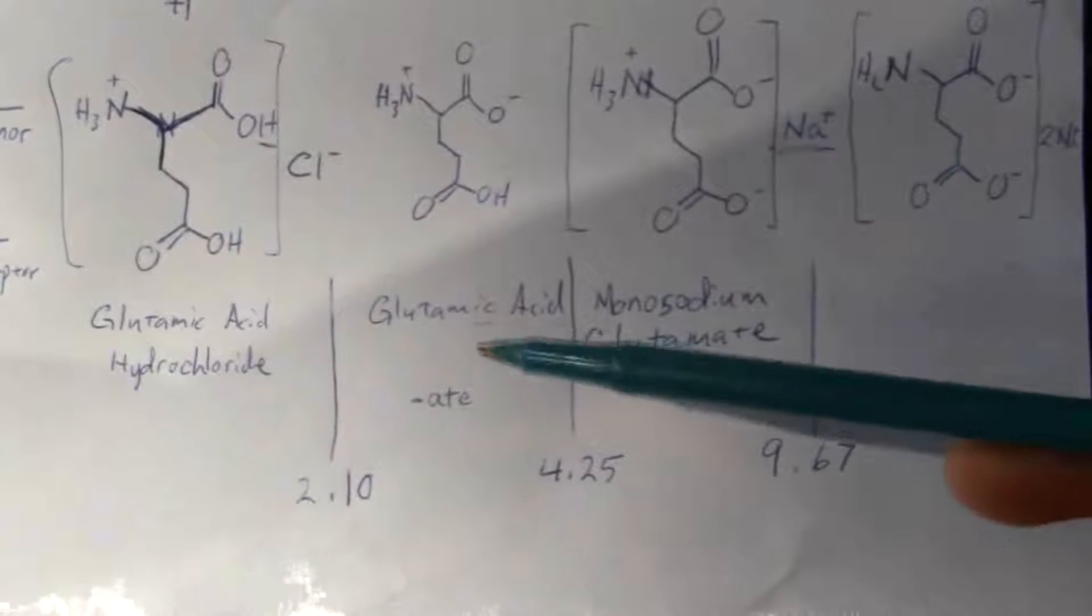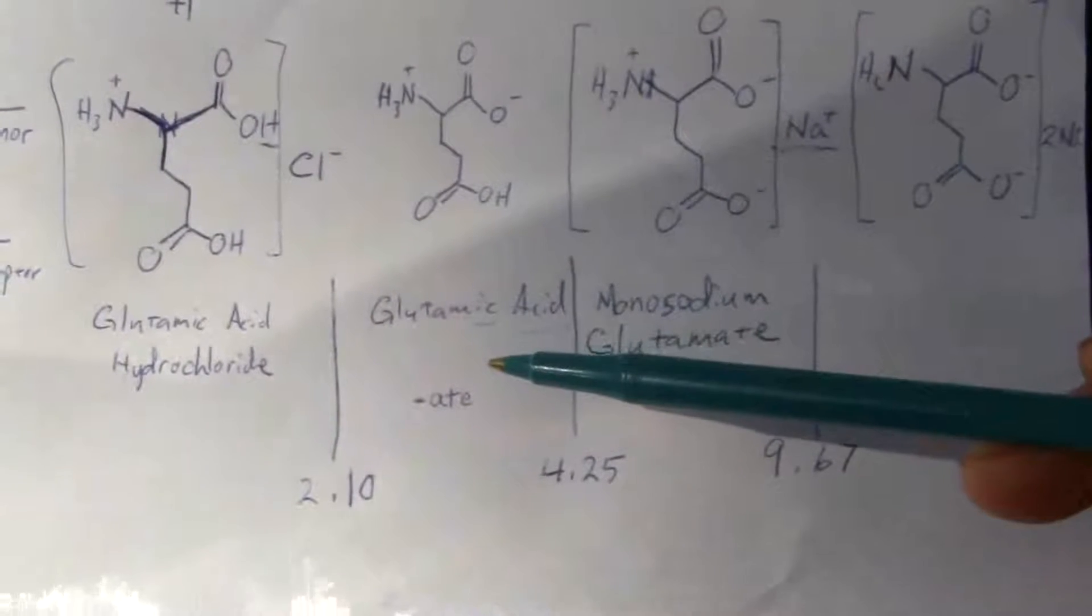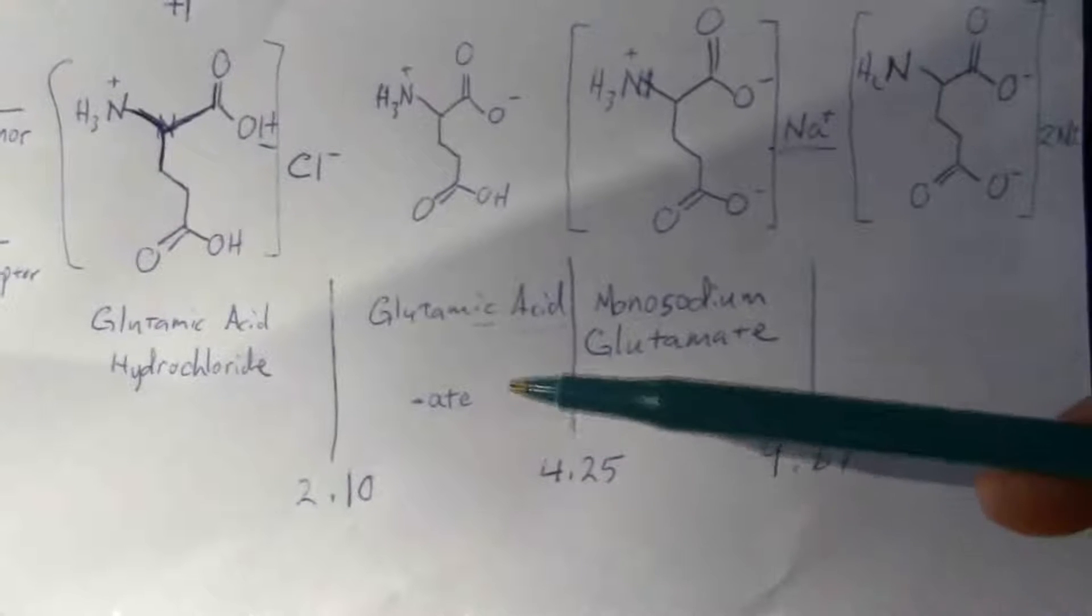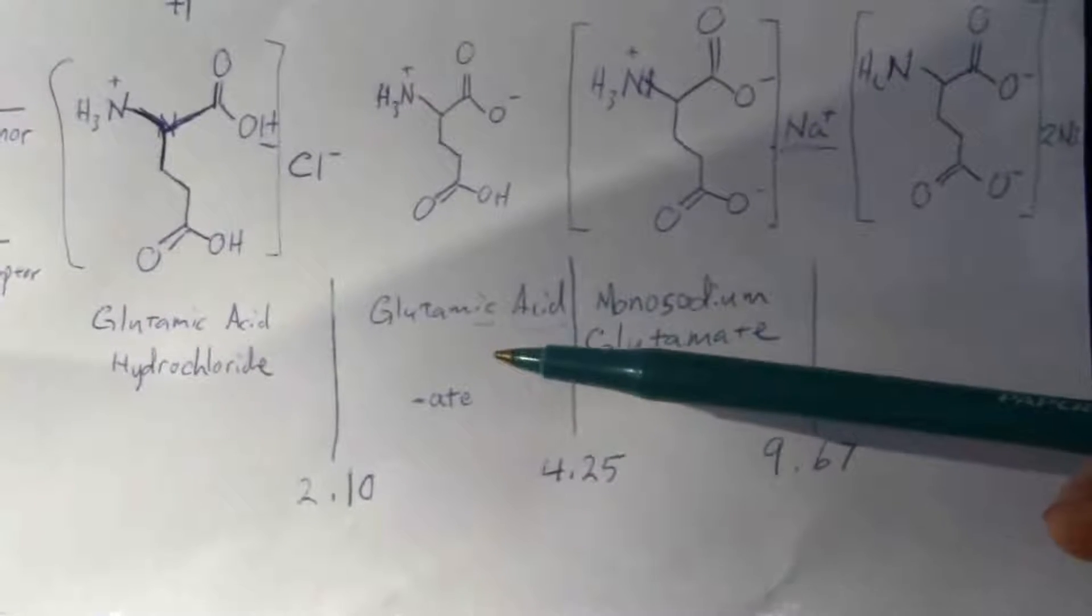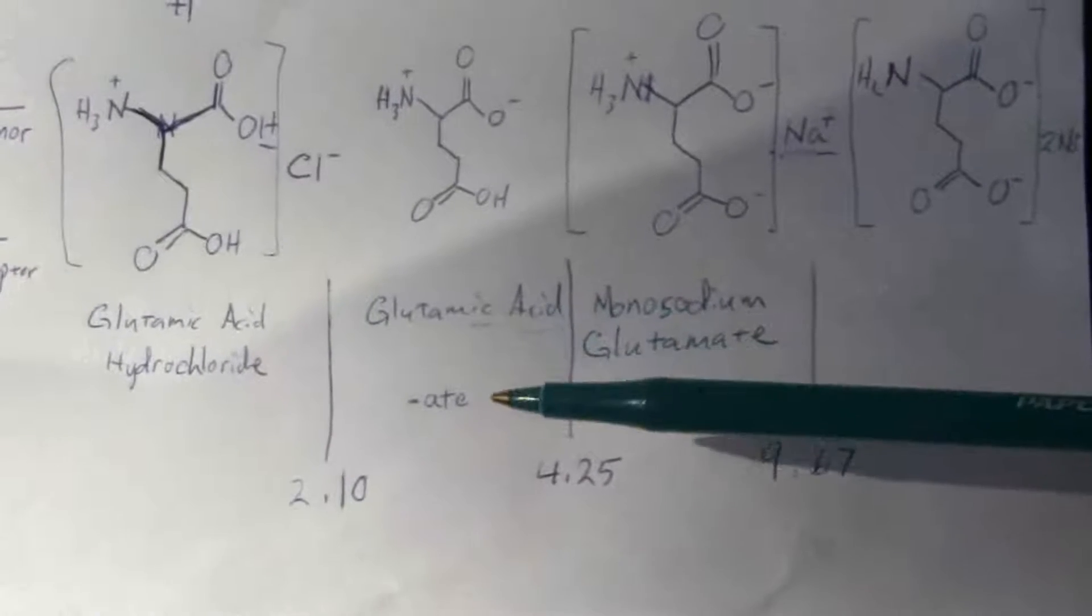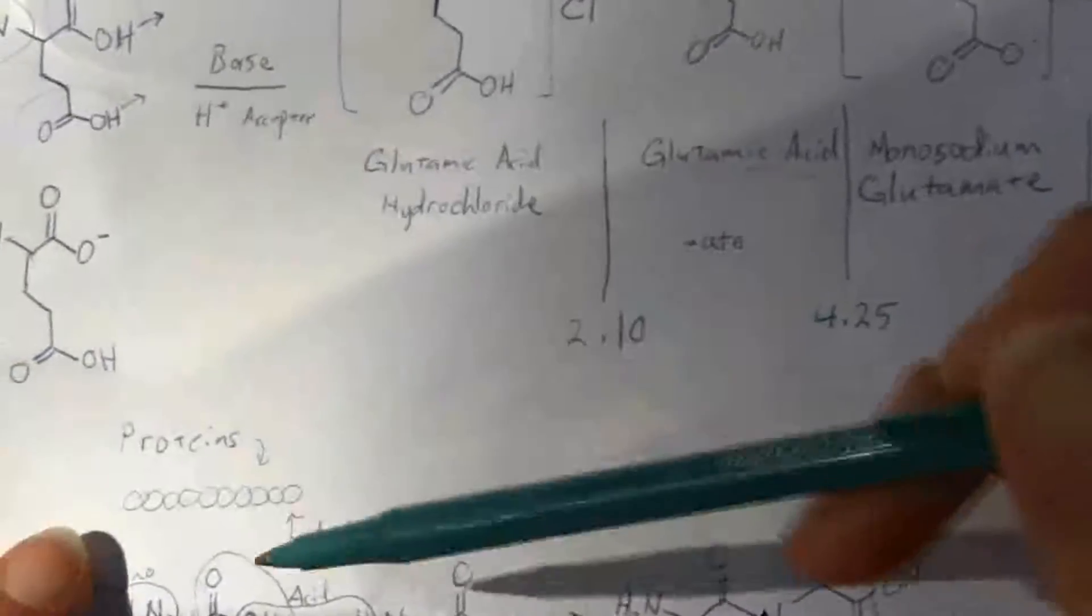This is a standard amino acid. It comes from many different proteins. When the protein is broken down, remember our protein chain, one of those links is a glutamic acid.